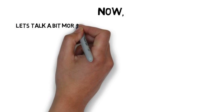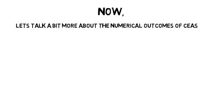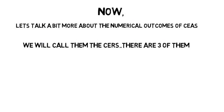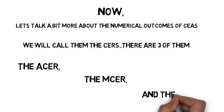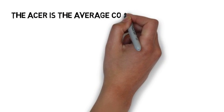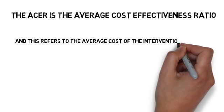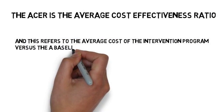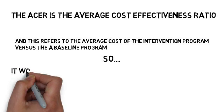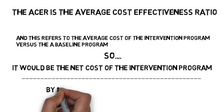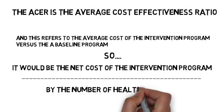Now, let's talk a bit more about the numerical outcomes of CEAs — we will call them the CERs. There are three of them: the ACER, the MERCER, and the ICER. The ACER is the average cost-effectiveness ratio, and this refers to the average cost of the intervention program versus the baseline program. It would be the net cost of the intervention program divided by the number of health outcomes.